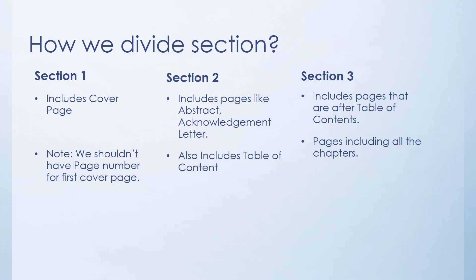Here is an overview of how we will be dividing sections in our document file. For this tutorial we'll have three different sections. Section 1 will include cover pages — usually cover pages are not given any page numbers. Section 2 will include pages like acknowledgement, letter, abstract, and table of contents. Depending on the nature of your document, sometimes you will also require pages like list of abbreviations, list of figures, and list of tables — all these pages are to be included in section 2. Section 3 however will include all the remaining pages after the table of contents.